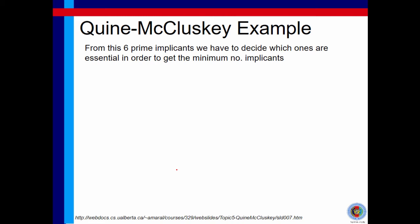Now that we have a total of 6 prime implicants, we have to decide which ones are essential. This is the last stage of the Quine-McCluskey algorithm. Remember that the first stage is to find prime implicants, and this stage is to find essential prime implicants. We need to find the essential ones and then get the minimum number of them.